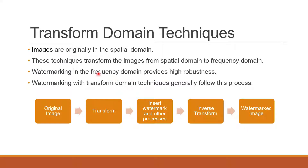For transform domain techniques, images are originally in the spatial domain as we know it. These techniques transform from the spatial domain to the frequency domain. In the frequency domain, watermarks embedded will have higher robustness. Watermarking with transform domain generally follows this process: first, we have the original image, which is transformed using transform domain techniques. In the frequency domain, this is where the watermark and other processes are used to further improve the algorithm. Then inverse transform is performed to obtain the watermarked image, which should ideally look similar to the original image.